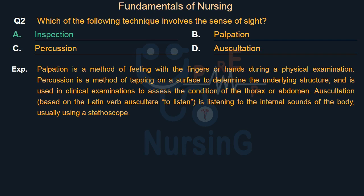Palpation is a method of feeling with the fingers or hands during a physical examination. Percussion is a method of tapping on a surface to determine the underlying structure, and is used in clinical examinations to assess the condition of the thorax or abdomen. Auscultation, based on the Latin verb 'auscultere' meaning to listen, is listening to the internal sounds of the body, usually using a stethoscope.